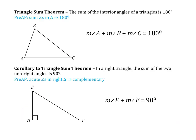Next, we have the triangle sum theorem, which says that the sum of the interior angles of a triangle is 180 degrees. So the measure of angle A plus the measure of angle B plus the measure of angle C will always add up to equal 180 degrees.